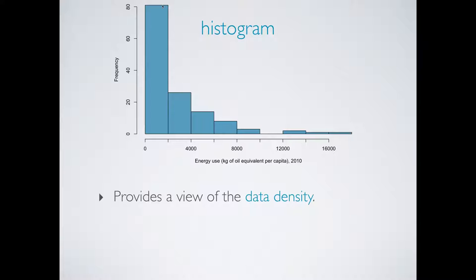Higher bars represent areas where data are relatively more common. We can see that majority of the countries use less than 2,000 kilograms of oil equivalent per capita. And looking at the heights of these bars, we can also guesstimate that the median of the distribution is going to be somewhere between 0 and 2,000.